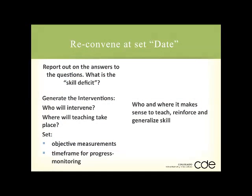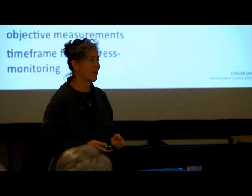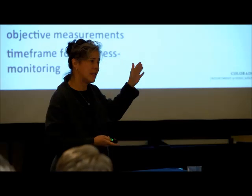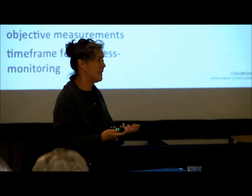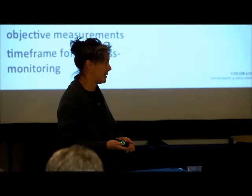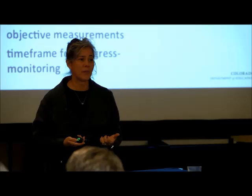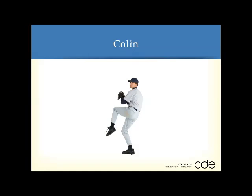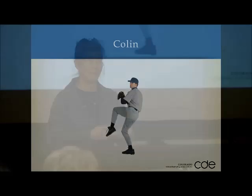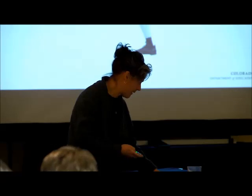We would come back in a month with answers to those questions. What did we find? Based on what we found, we would develop our interventions, then move forward with progress monitoring, making sure we were implementing our plan. Who would teach it? Who would reinforce it? How do we generalize this across home, community, and school? For kids with these really deep issues, you have to generalize across different settings. If you do it in just one setting, you're not going to have the impact you need. So let me show you how this really worked in practice on a kid as we went through the process — I'm going to tell you the story of Colin.